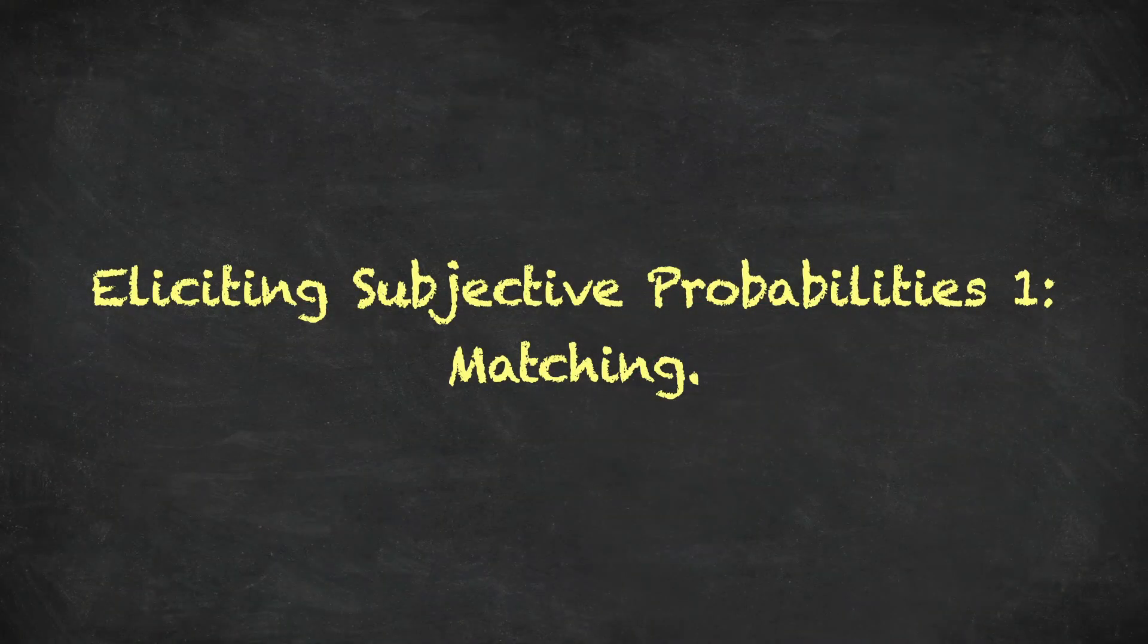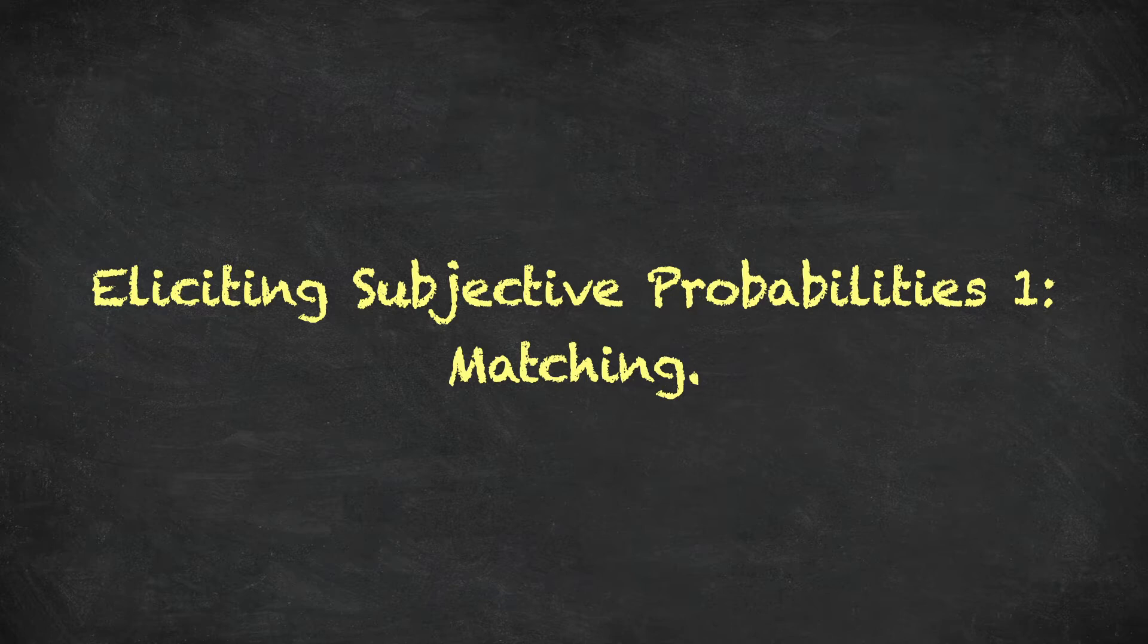Now that we've discussed several methods for eliciting von Neumann-Morgenstern utility functions, let's have a look at how to elicit probability measures, subjective probabilities. So the first technique we'll look at is called matching. Before we do...